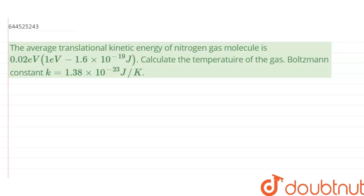So the question is on the screen right now. The question is: the average translational kinetic energy of nitrogen gas is 0.02 electron volt, and one electron volt is equal to 1.6 × 10^-19 joule. Calculate the temperature.